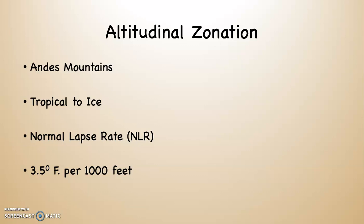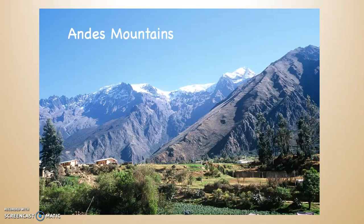So if you were at sea level looking at a mountain that was 10,000 feet high, on average the top of that mountain would be 35 degrees cooler. This picture of the Andes was taken at about the equator, and you can see that even though it's at the equator, there are glaciers on the tops of those mountains. All the way down at the bottom at sea level, it would be a tropical environment.